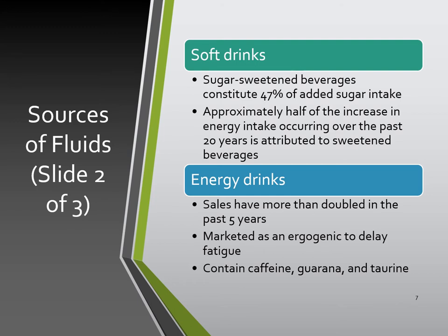Energy drink sales have more than doubled in the past five years. They are marketed as an ergogenic to delay fatigue — basically a stimulant that wakes you up. They typically contain caffeine, guarana, and taurine, all considered stimulants. While sugar-free versions exist, the typical energy drink contains about 140 calories per 8-ounce serving just from sugar and carbohydrates.